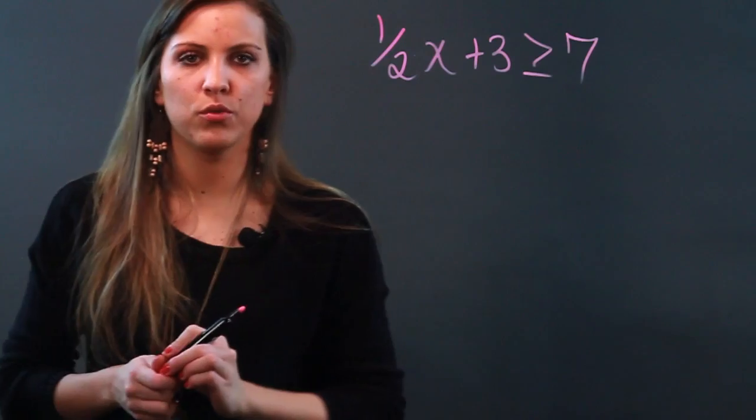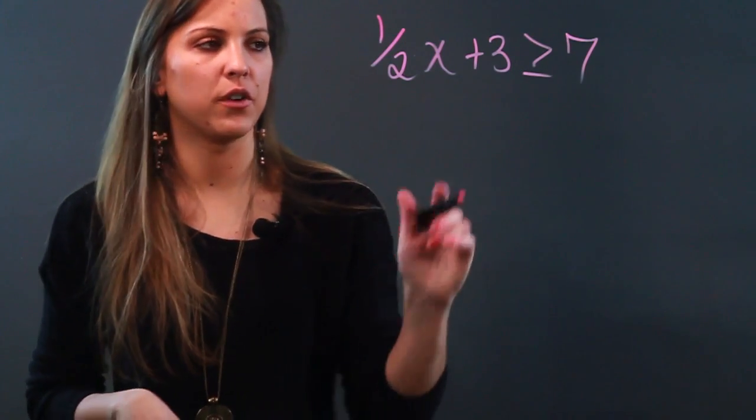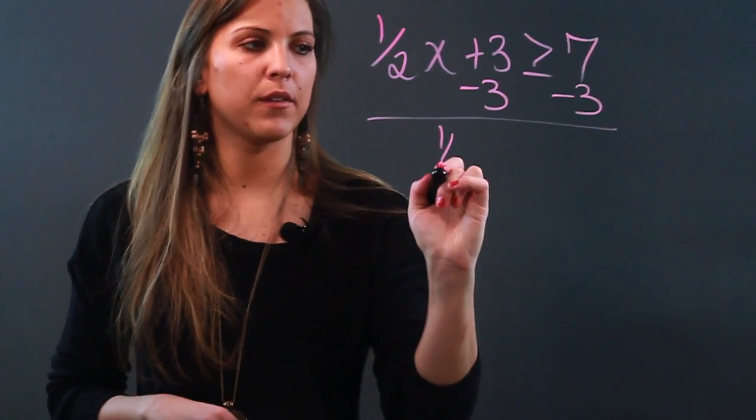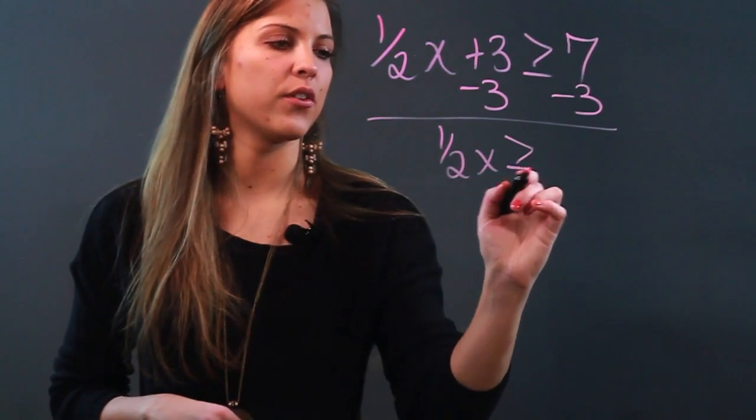First, what you want to do, just like equations, is get rid of addition or subtraction first. So I'm going to do minus 3 on both sides, and when I do that I'm left with 1/2 X is greater than or equal to 4.